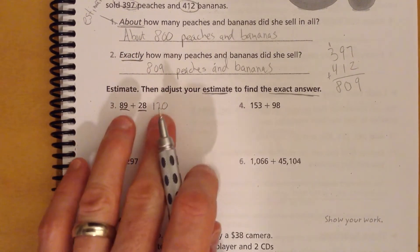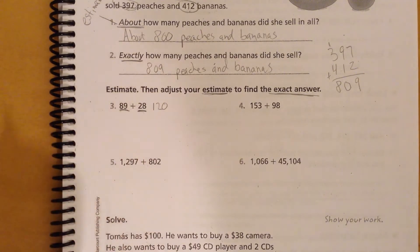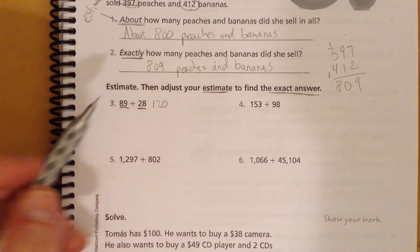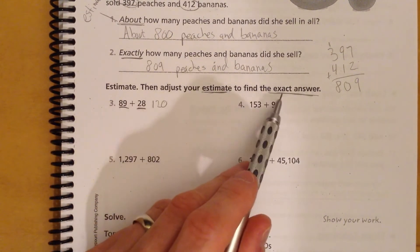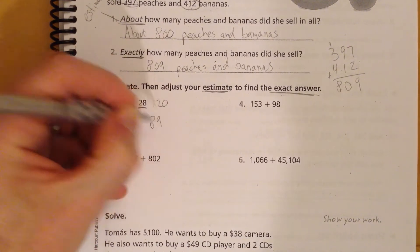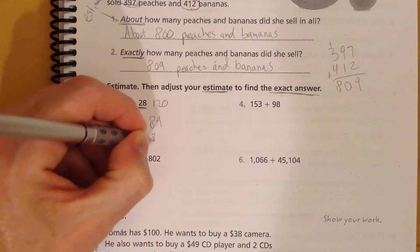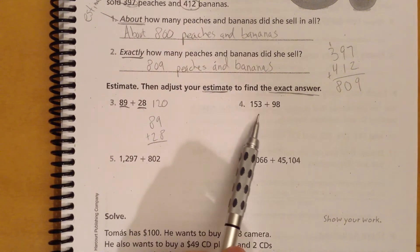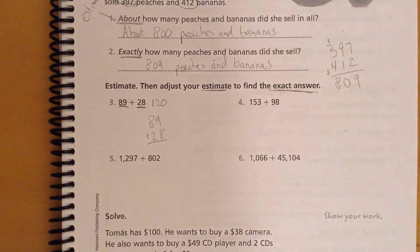Now, once again, that's not an exact number. That's just an estimate, okay? Just an estimate. We're getting kind of close. Then, so I estimated, and now I'm going to find the exact answer. So, I'm going to go ahead and do the 89 plus 28. I'm going to let you go ahead and figure out the exact answer for this. And I'm going to talk about this one just real quick, okay?